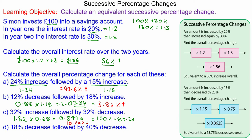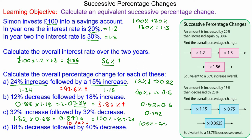Finally, for question d, we have an 18 percent decrease, which represents 0.82, followed by a 40 percent decrease, which is 0.6. So we have 0.82 times 0.6, which gives 0.492. The difference between the initial 100 percent and the final 49.2 percent is a 50.8 percent decrease.